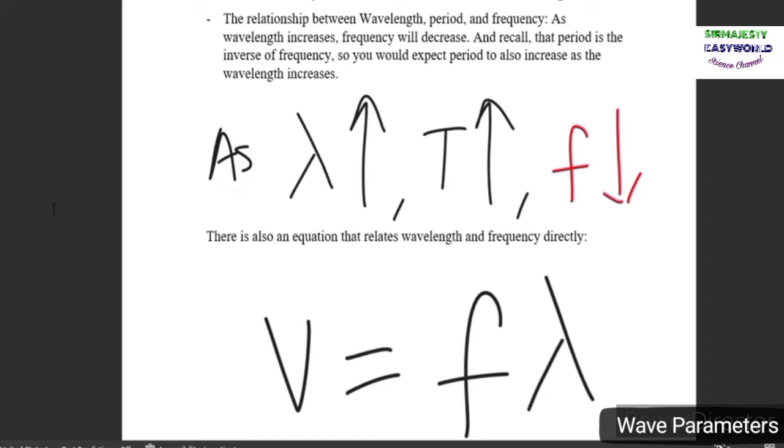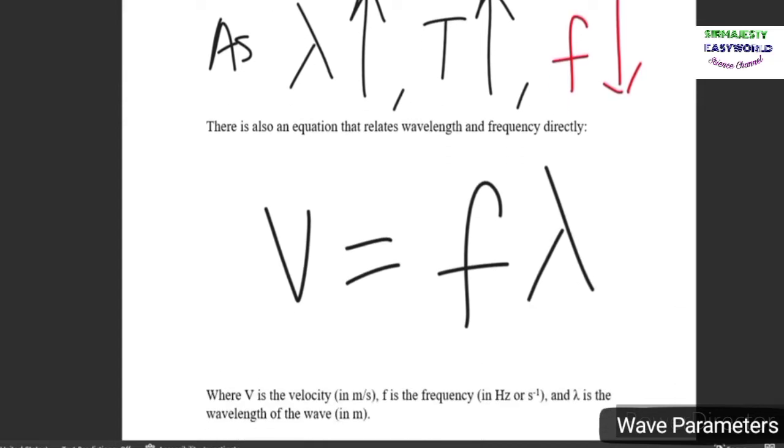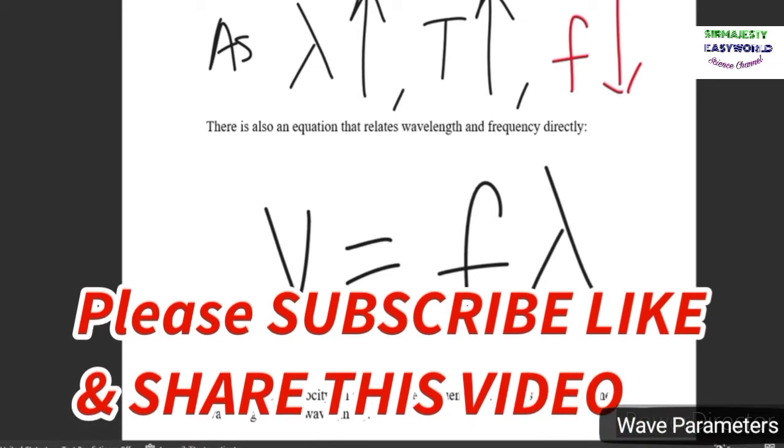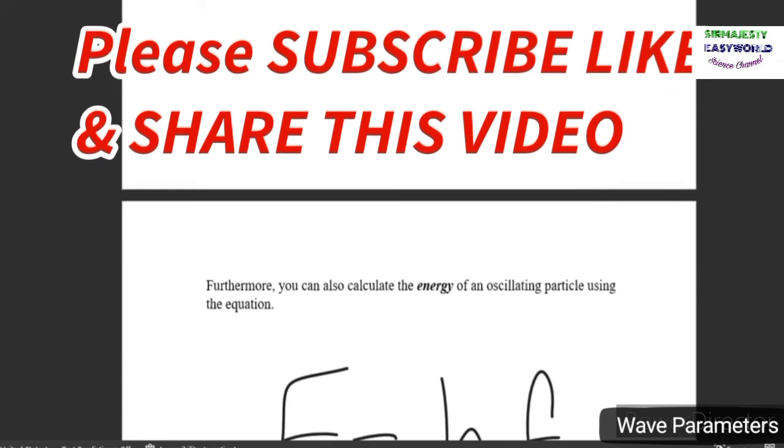There is an equation that relates wavelength and frequency directly, and this is v equals f lambda, where v is the velocity in meters per second, f is the frequency in hertz or seconds to the negative one, and lambda is the wavelength of the wave in meters.